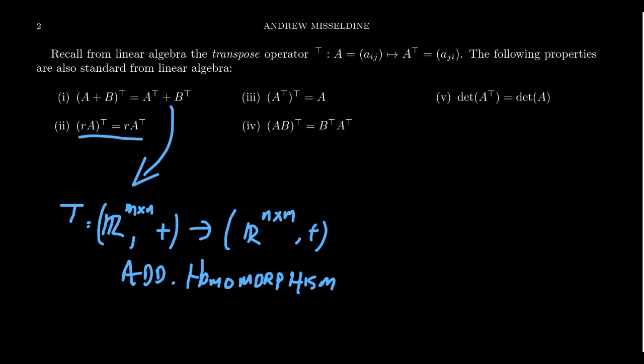The transpose also preserves scalar multiplication: if r is a scalar, then (rA) transpose equals r times A transpose. Although analogies of the transpose exist for basically any field, we are talking about real vector spaces and real matrices in this context. For complex matrices, we don't talk about the transpose — we talk about something called the conjugate transpose. For other vector spaces, you can talk about transposes, but it doesn't have the same geometric benefit as it does for the real numbers.